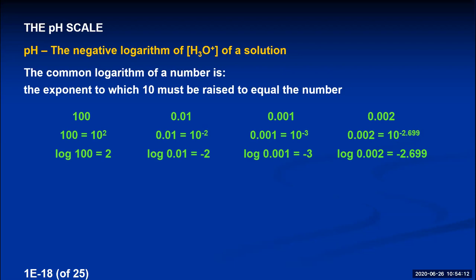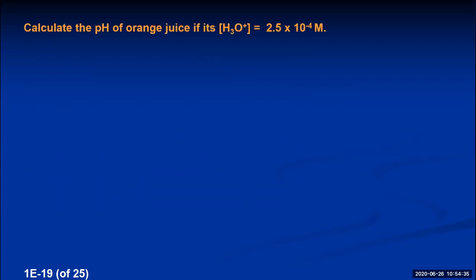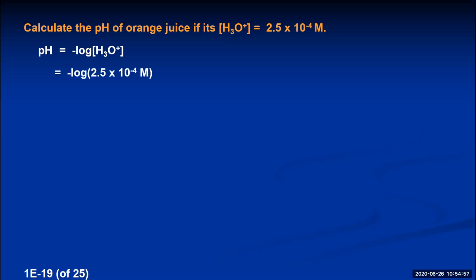We can similarly represent hydroxide concentration as pOH — the negative logarithm of the hydroxide concentration. Let's calculate the pH and pOH of pure water at 25°C. The hydronium concentration is 1.00 × 10⁻⁷ M, so pH = −log(1.00 × 10⁻⁷) = 7.000 (three significant figures, written three places past the decimal). Since the hydroxide concentration is also 1.00 × 10⁻⁷ M, pOH = 7.000 as well.